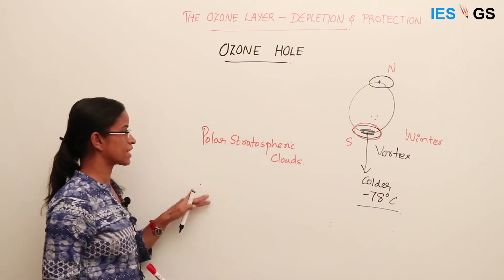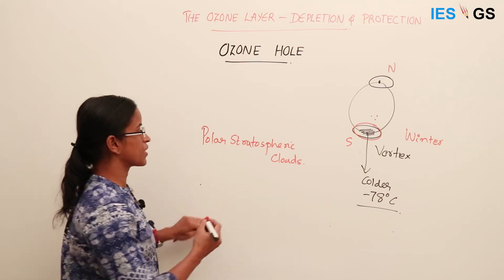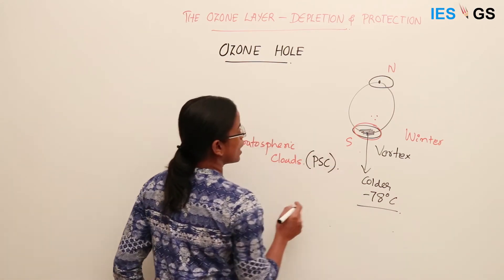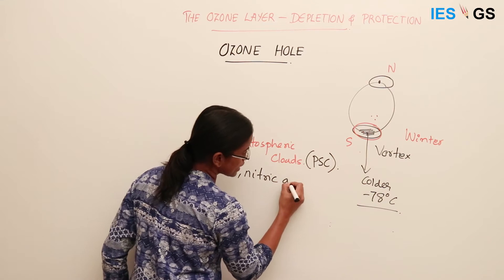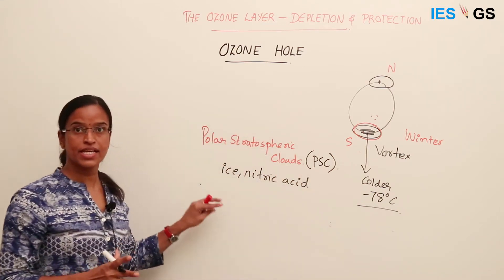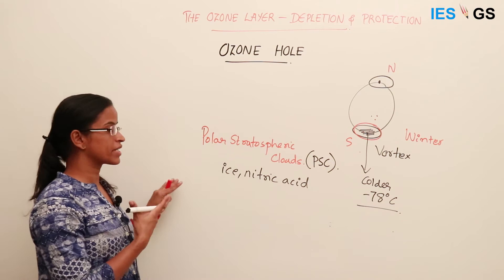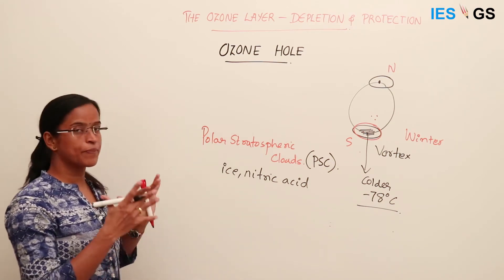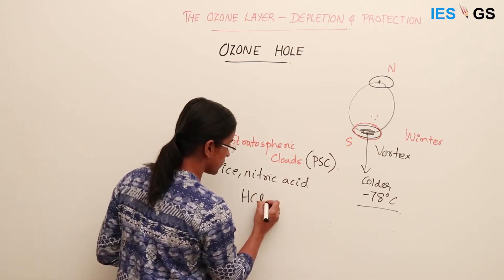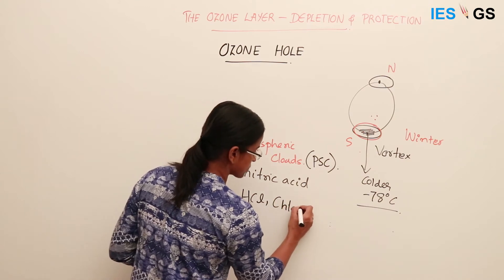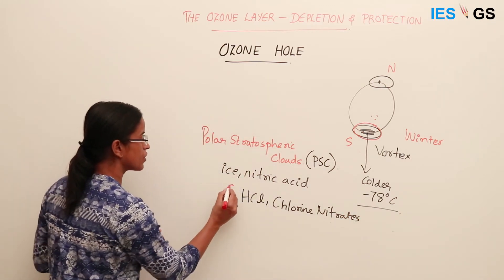Polar stratospheric clouds, or PSCs, form in the stratosphere over polar regions. They are formed of tiny crystals of ice and nitric acid compounds, giving them a shining appearance — they are also called nacreous or pearl clouds. These clouds preserve certain chemicals like hydrogen chloride and chlorine nitrate, which are reservoirs of chlorine.